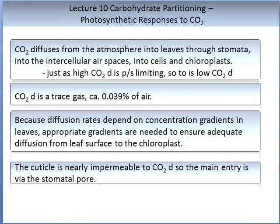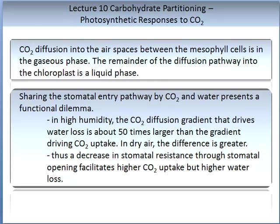CO2 diffuses from the atmosphere into the leaves through the stomata, into the intercellular airspaces, then into the cells and finally into the chloroplast. Just as high CO2 diffusion is photosynthetically limiting, so is low CO2 diffusion. CO2 is a trace gas with an approximate concentration of 0.039% of air. Because diffusion rates depend on concentration gradients in leaves, appropriate gradients are needed to ensure adequate diffusion from the leaf surface to the chloroplast. The cuticle is nearly impermeable to CO2 diffusion, so the main entry is via the stomatal pore. CO2 diffusion into the airspaces between mesophyll cells is in the gaseous phase, while the remainder of the diffusion pathway into the chloroplast is in the liquid phase.